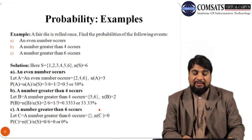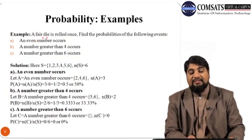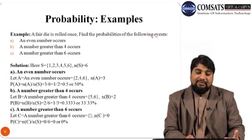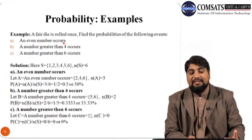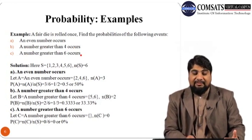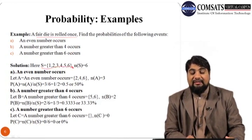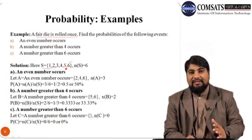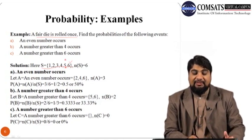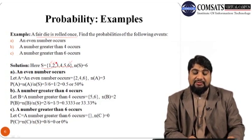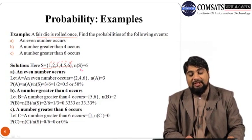Let us discuss one more example. A fair die is rolled once. Find the probability of: part A, an even number occurs; part B, a number greater than 4 occurs; part C, a number greater than 6 occurs. Since a die has 6 faces, the sample space is {1, 2, 3, 4, 5, 6}, so n(S) = 6.